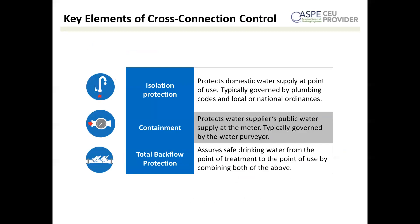Containment is the separation of a property's private water system from the city's drinking water supply system. This is done downstream of the water service connection — the water meter — and is achieved by installing a backflow prevention device immediately after the water meter. The water purveyor gives you water and doesn't want it back because they don't know what you did to it, so it protects you from your neighbors and vice versa. Total backflow protection combines isolation and containment to ensure safe drinking water from the point of treatment all the way to the point of use.